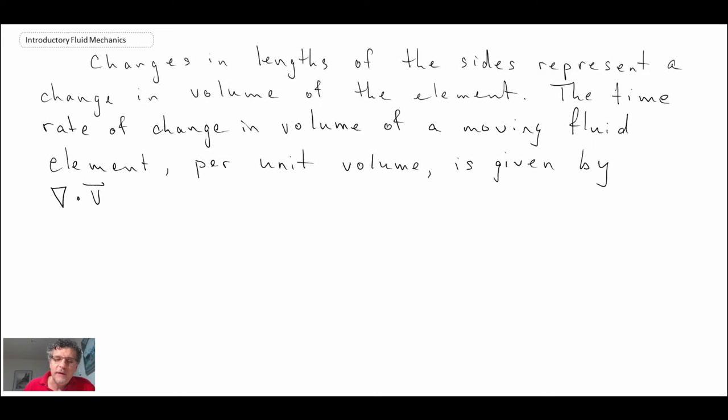So what we said is that the time rate of change of a volume element or a fluid element per unit volume is given by del dot v, and that was the divergence vector operator, which we said operates on a vector.